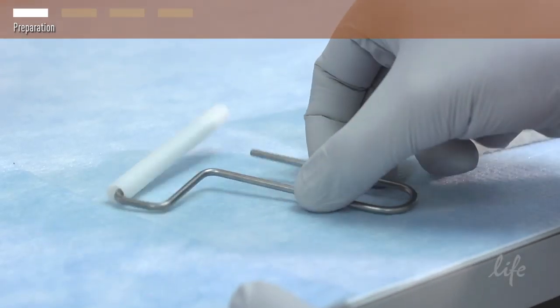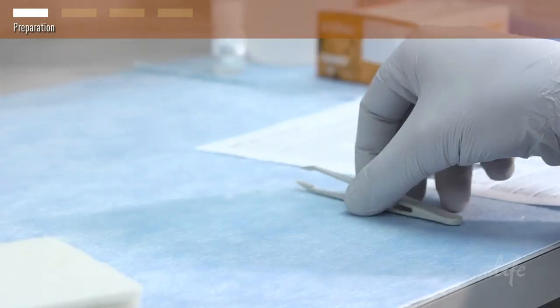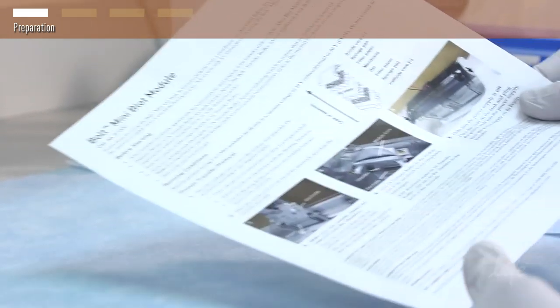Included in the Bolt blot module kit is a roller, sponge pads, tweezers, and the quick reference card.